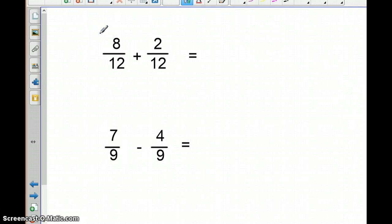I want you to go ahead and try these two practice problems on your own. So you're going to practice adding 8 twelfths plus 2 twelfths. Notice the denominators are like. They are the same. And then I'd also like you to subtract 7 ninths minus 4 ninths.